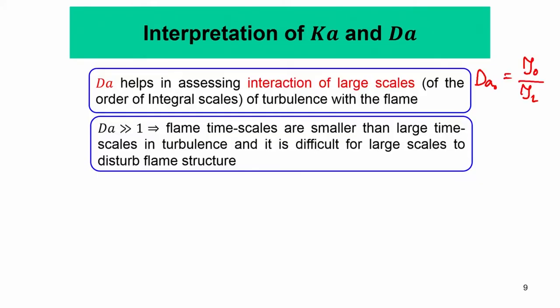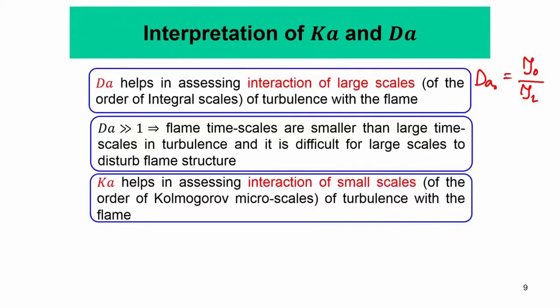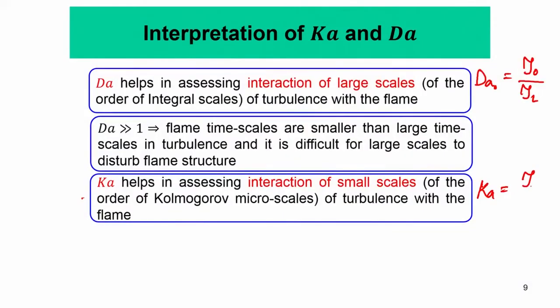When the Damköhler number is much greater than 1, the flame structure essentially retains the same properties as a laminar flame. When the Damköhler number is less than 1, eddies of the integral length scale can disturb the flame structure. Damköhler number less than 1 means the flame-turbulence interaction becomes very strong and can span from integral-size eddies down to the smallest scales. The Karlovitz number, on the other hand, assesses the interaction of small scales of turbulence with the flame — it is the flame time scale divided by the Kolmogorov time scale — and tells us how much mixing can occur inside the flame structure, such as mixing of fresh reactants with intermediates or intermediates with products.